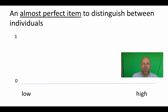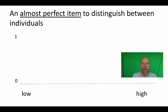Suppose we try to measure the level of a specific latent trait — say the level of mathematical knowledge — with one single item. And suppose that item is almost perfect, because in the remainder of this micro lecture I will use almost perfect items. The problems I will identify are much bigger than I present here, because we hardly ever use almost perfect items.